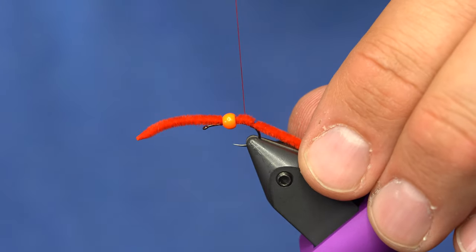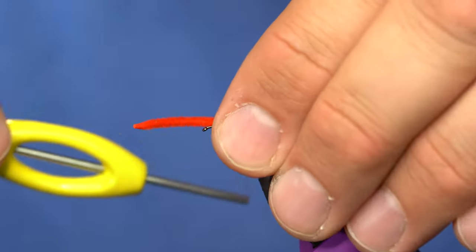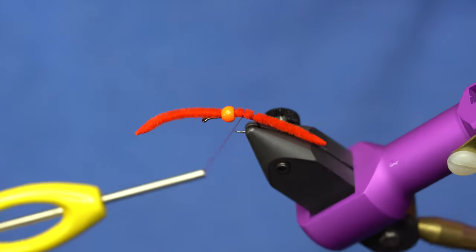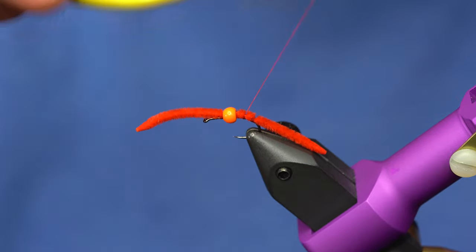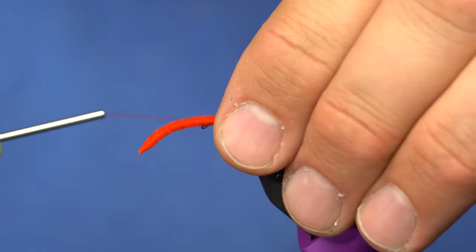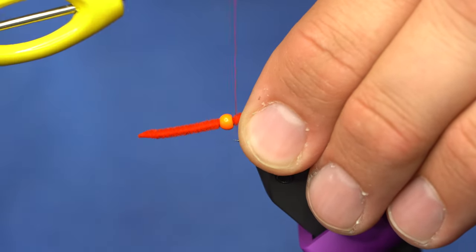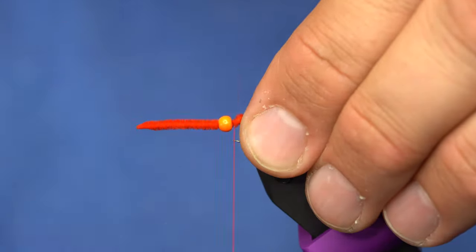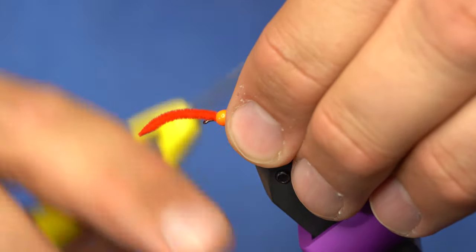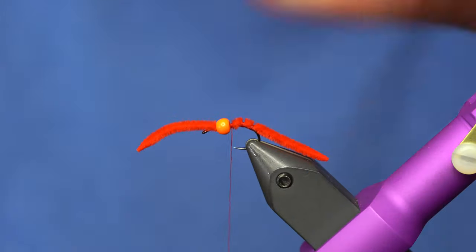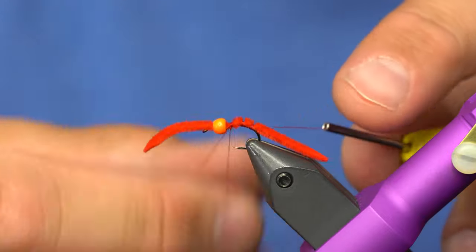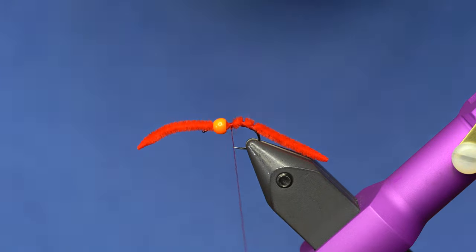Now the next bunch of wraps, I've advanced my thread underneath the chenille, but forward, and we're going to do three or four wraps, and do the same thing to about right there. So once we're here, I will just hand whip finish, and that's where our bead's going to sit.